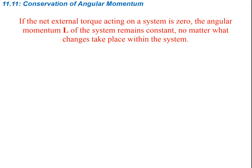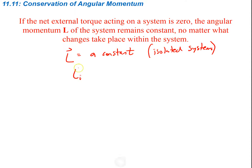The conservation of angular momentum: if the net external torque acting on a system is zero — meaning there are no external torques acting on it, it could be rotating but no additional forces causing a torque — then the angular momentum L of the system remains constant no matter what changes take place within the system. So angular momentum is constant in an isolated system, and isolated just means there are no external forces acting on it.